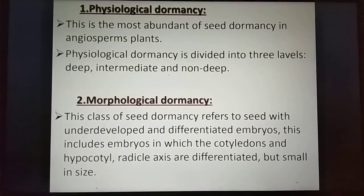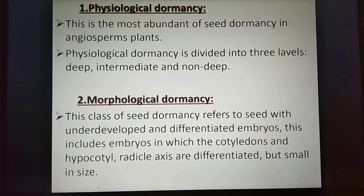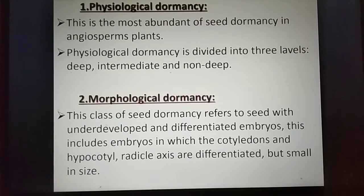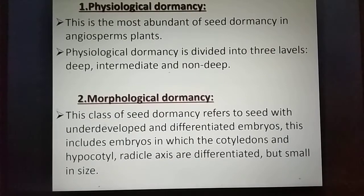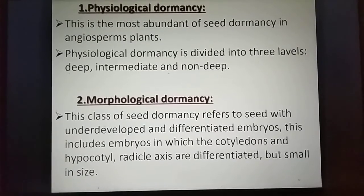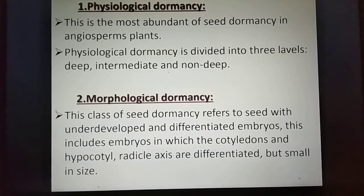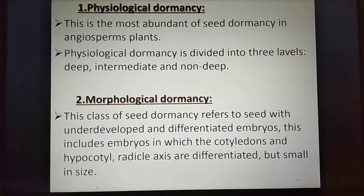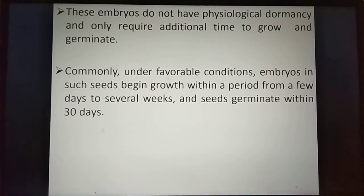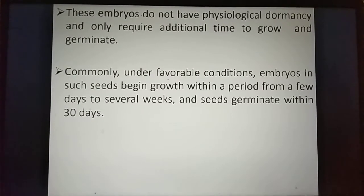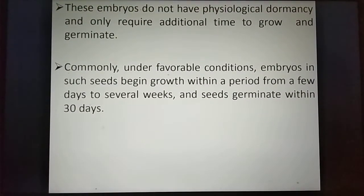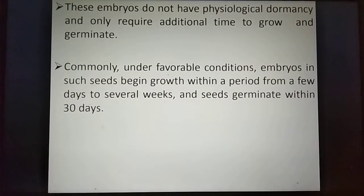Number one, physiological dormancy — this is the most abundant type of seed dormancy in angiospermous plants. Physiological dormancy is divided into three levels: deep, intermediate, and non-deep. Number two, morphological dormancy — this class refers to seeds with undeveloped and differentiated embryos, including embryos in which the cotyledons and hypocotyl-radicle axis are differentiated but small in size. These embryos do not have physiological dormancy and only require additional time to grow and germinate. Embryos begin growth within a few days to several weeks and seeds germinate within 30 days.